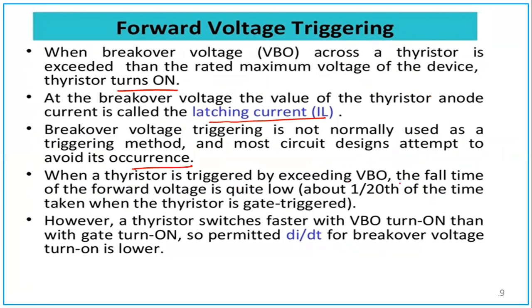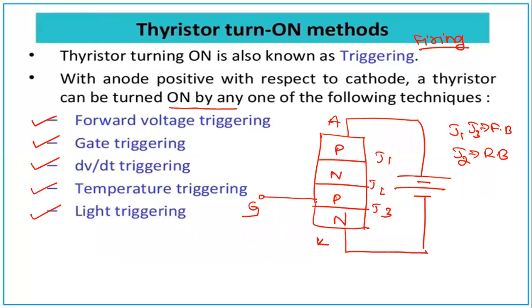When a thyristor is triggered by exceeding VBO, the forward voltage falls quite low. However, a thyristor switches faster with VBO turn-on than with gate turn-on, but the permitted dI/dt for breakover voltage turn-on is lower. The width of the depletion region decreases because J1 and J3 are forward biased, which accelerates minority carriers across J2. Avalanche breakdown of J2 occurs at the forward breakover voltage, allowing free movement of carriers across all three junctions. This method is not normally used.